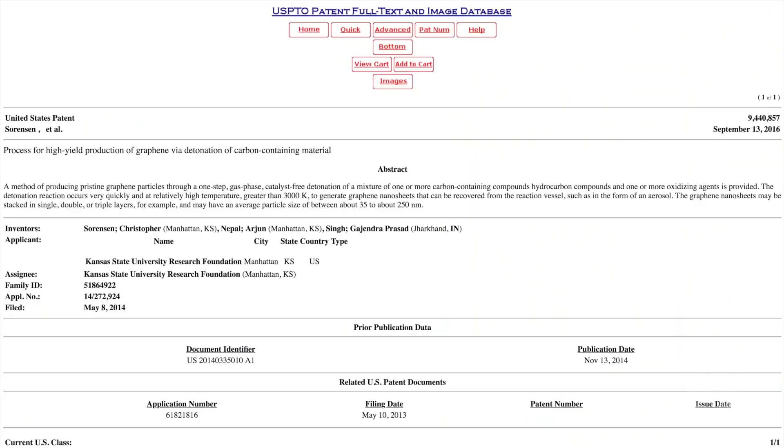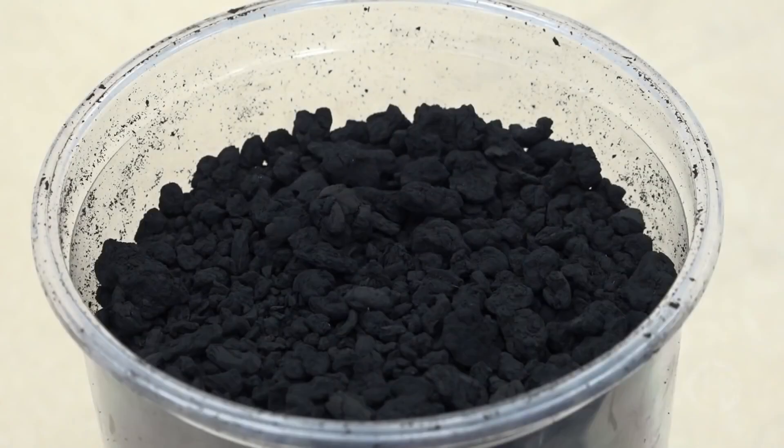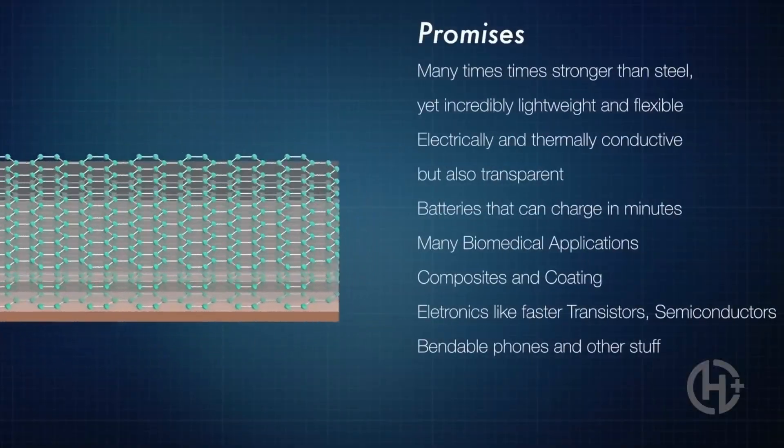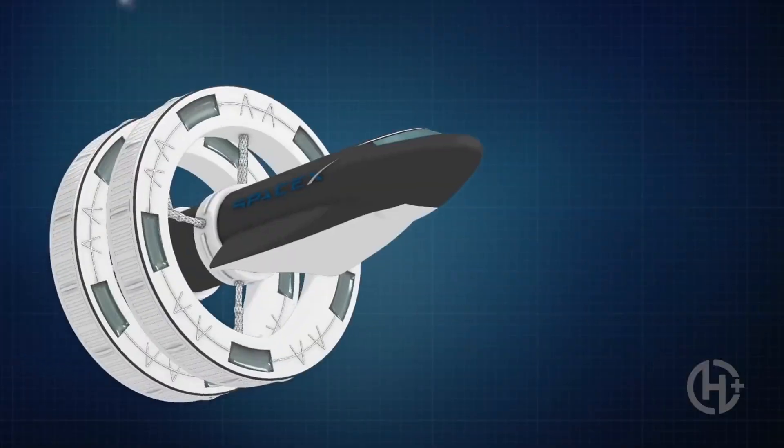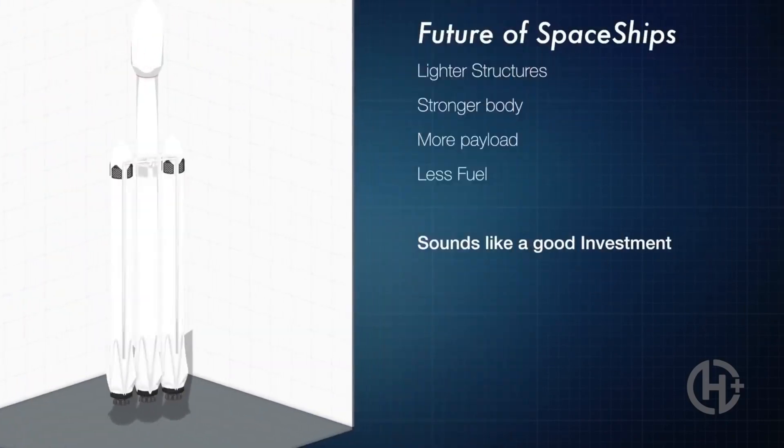More interestingly, this groundbreaking process was discovered by accident, as a byproduct when the team was working with carbon soot aerosol gels. Dr. Sorensen's method is interesting, but it doesn't produce pure graphene. It only creates an oxidized version of the material, which doesn't perform as well in intended applications.